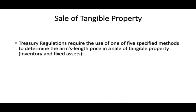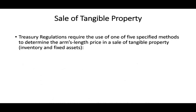We're going to start by looking at the sale of tangible property and specifically we're going to be looking at the treasury regulation. The treasury regulation in the U.S. required the use of one of five specified methods to determine the arm length price in a sale of tangible property, whether it's inventory or fixed asset. Remember, the transaction has to be an arm length transaction — how much would you charge a party that's not related to you? Here are the five methods.